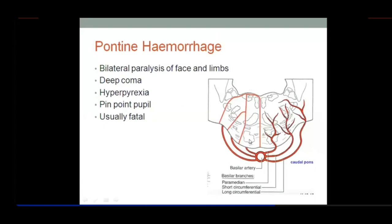The autonomic fibers from the thalamus and hypothalamus, which descend to the lower medulla to control the vital centers, are also damaged in pontine hemorrhage. This ultimately leads to death.